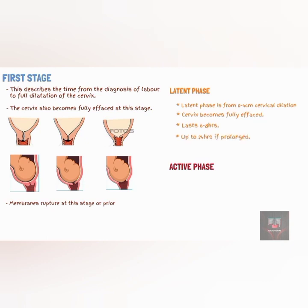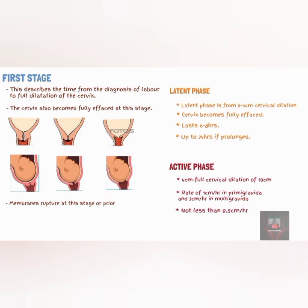The active phase is the stage when the cervix dilates from 4 cm to 10 cm. Cervical dilation occurs at a rate of 1 cm per hour in primigravida and a rate of 2 cm per hour in multigravida. However, a cervical dilation rate of greater than 0.5 cm per hour is generally acceptable. This stage can last up to 12 hours.